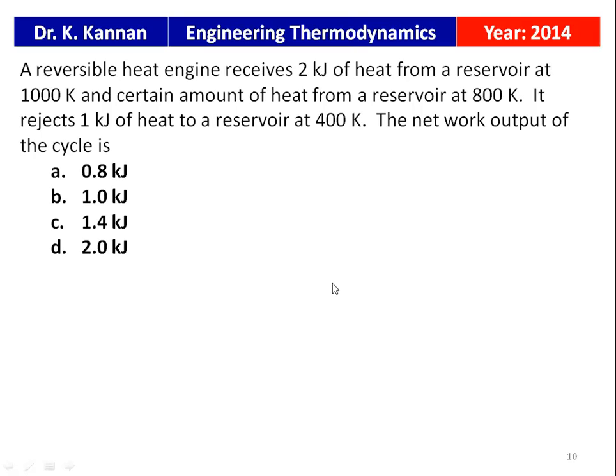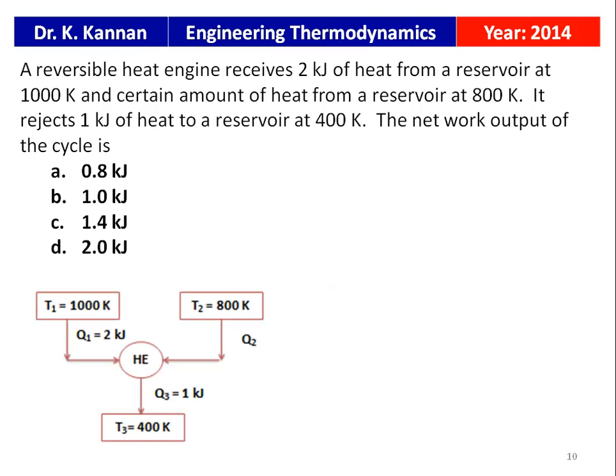This question is from the 2014 question paper. A reversible heat engine receives 2 kJ of heat from a reservoir at 1000 Kelvin and a certain amount of heat Q2 from a reservoir at 800 Kelvin. It rejects 1 kJ of heat to a reservoir at 400 Kelvin. The net work output options are: 0.8 kJ, 1 kJ, 1.4 kJ, and 2 kJ.